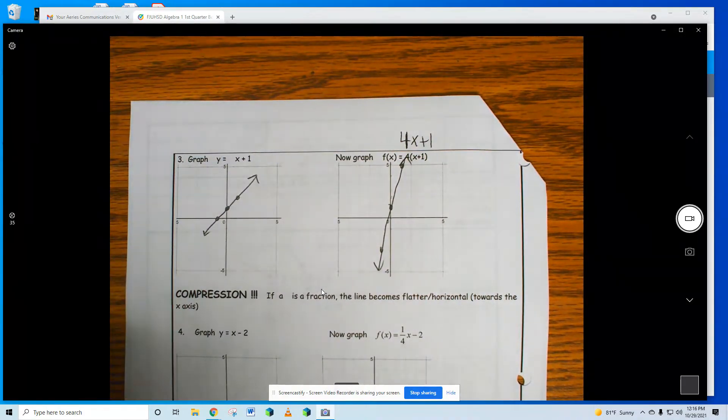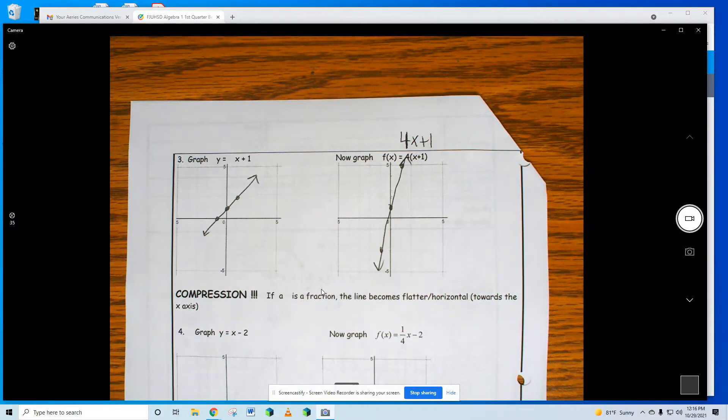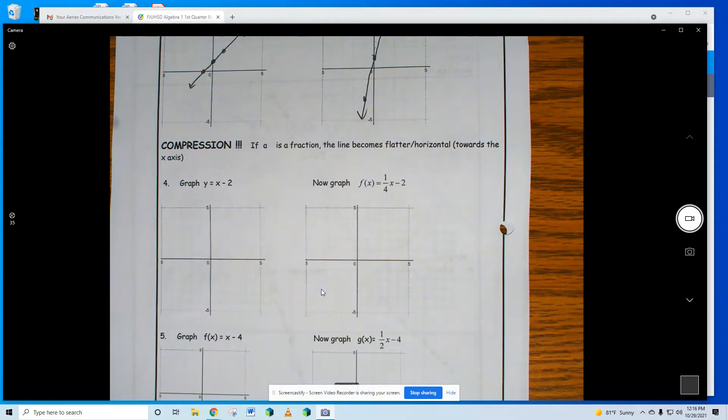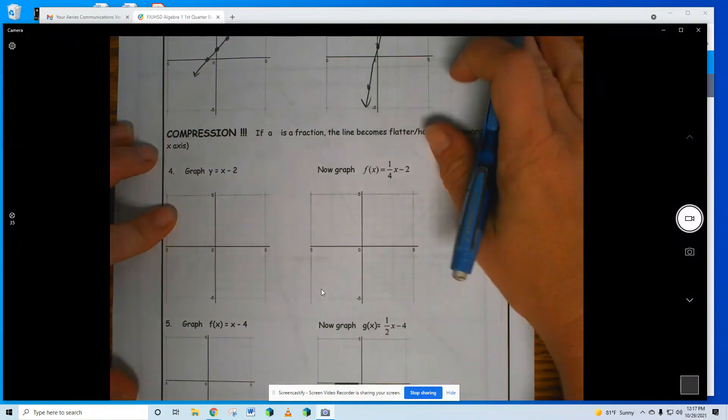So an a is a stretch. An a of a 2, a 3, or 4, a whole number makes it more towards the y-axis. It gets steeper: stretch, steeper, stretch. You can remember it that way, maybe. Can you please close your Chromebook? Thanks. Okay, here we go. Now next topic: a compression. A compression is going to be when I have a fraction in front—1/2, 1/3, 1/4, even 3/4 or 7/8, or any fraction. It's going to flatten out my graph.